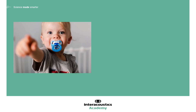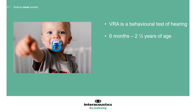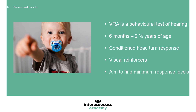To summarise briefly: VRA is a behavioural test of hearing best suited for infants from six months to around two and a half years of age. VRA relies on the principles of conditioning and the child's head turn in response to the presentation of a sound stimulus. Visual reinforcers are used as part of the conditioning phase and as a reward and ongoing reinforcement throughout testing. The aim of VRA is to identify minimum response levels at different frequencies in order to obtain information regarding the child's hearing.